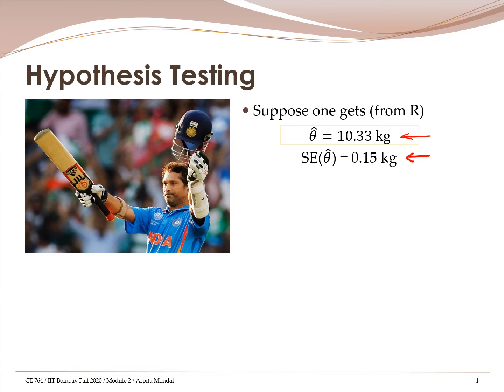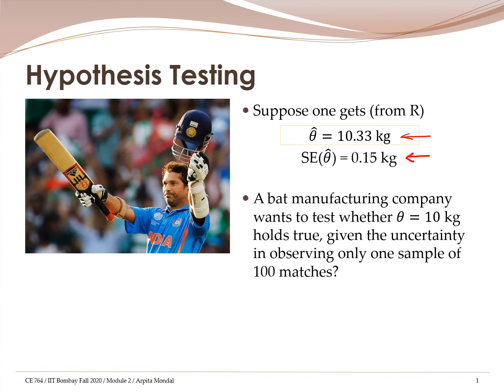The uncertainty arises because we have a single sample of 100 matches — we could have observed another set of 100 matches instead. Because of sampling variability there is uncertainty, and that's what we are testing our hypothesis against. So whether theta equals 10 kg, given that there is sampling uncertainty.